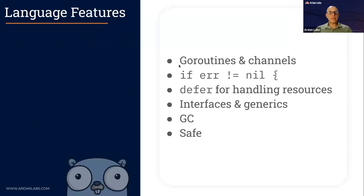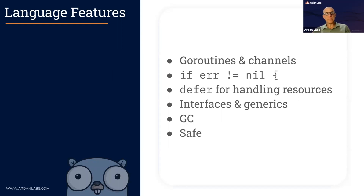Let's talk about development — the phase where programmers are writing code. We're going to talk about some of the things in Go that make it developer-friendly. One is Go routines and channels, which are the bread and butter of Go: running services, using all the CPUs, all the cores. This is what Go does best — Go routines and channels making concurrency accessible to your developers.